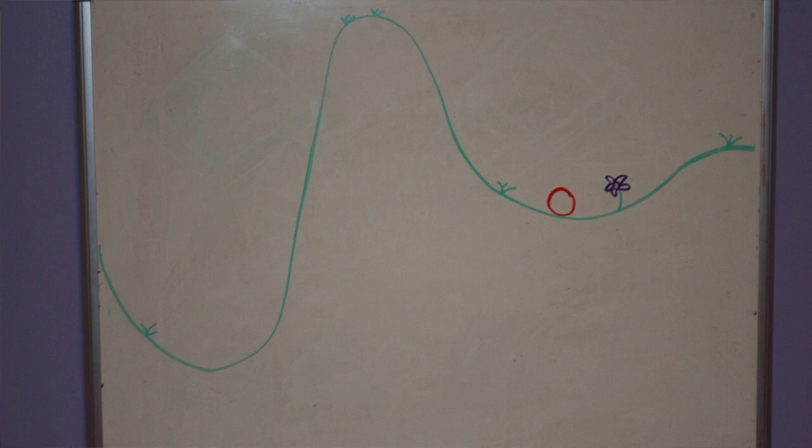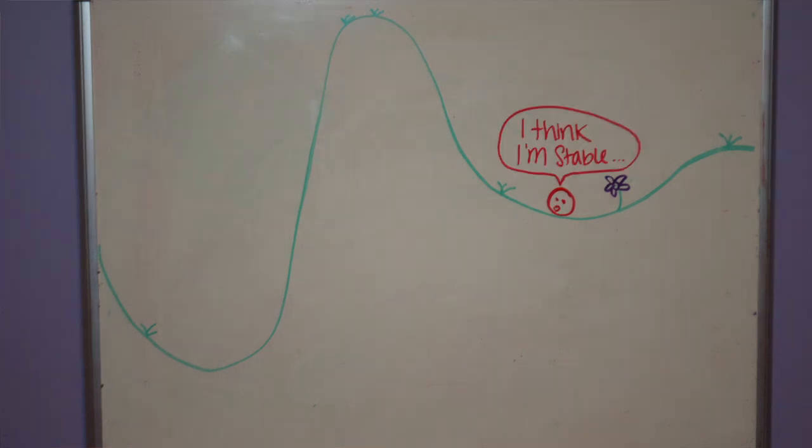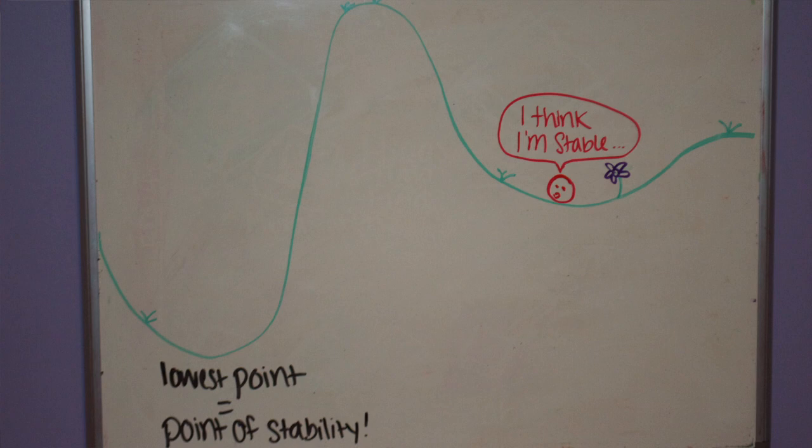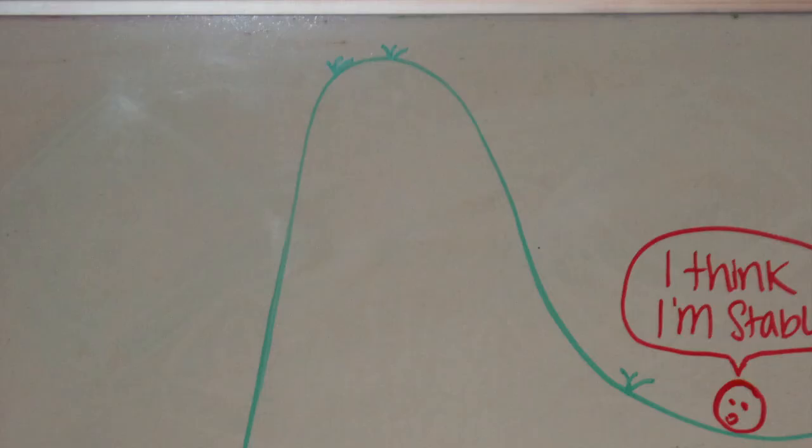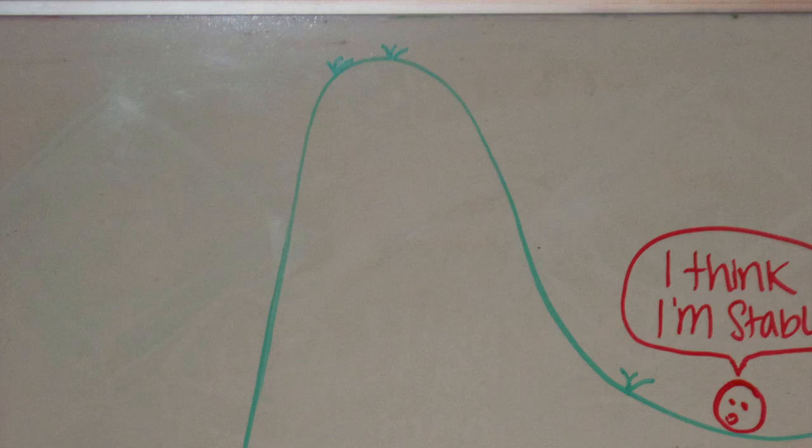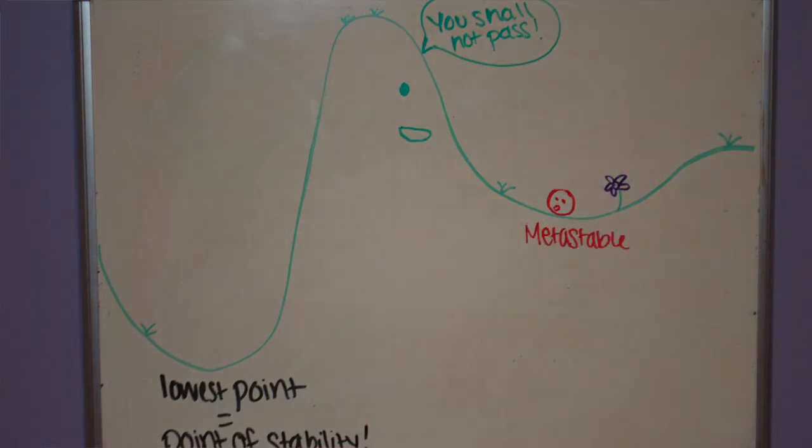To truly understand what this means, let's imagine that we have a ball next to a hill. You can see that the ball is stationary since it is in this valley, so it seems stable. However, because it isn't at its lowest possible point, which is the point of stability, it isn't stable. This hill right here is acting like a barrier and isn't allowing the ball to get to its lowest point, so the ball is metastable. It's faking its stability.